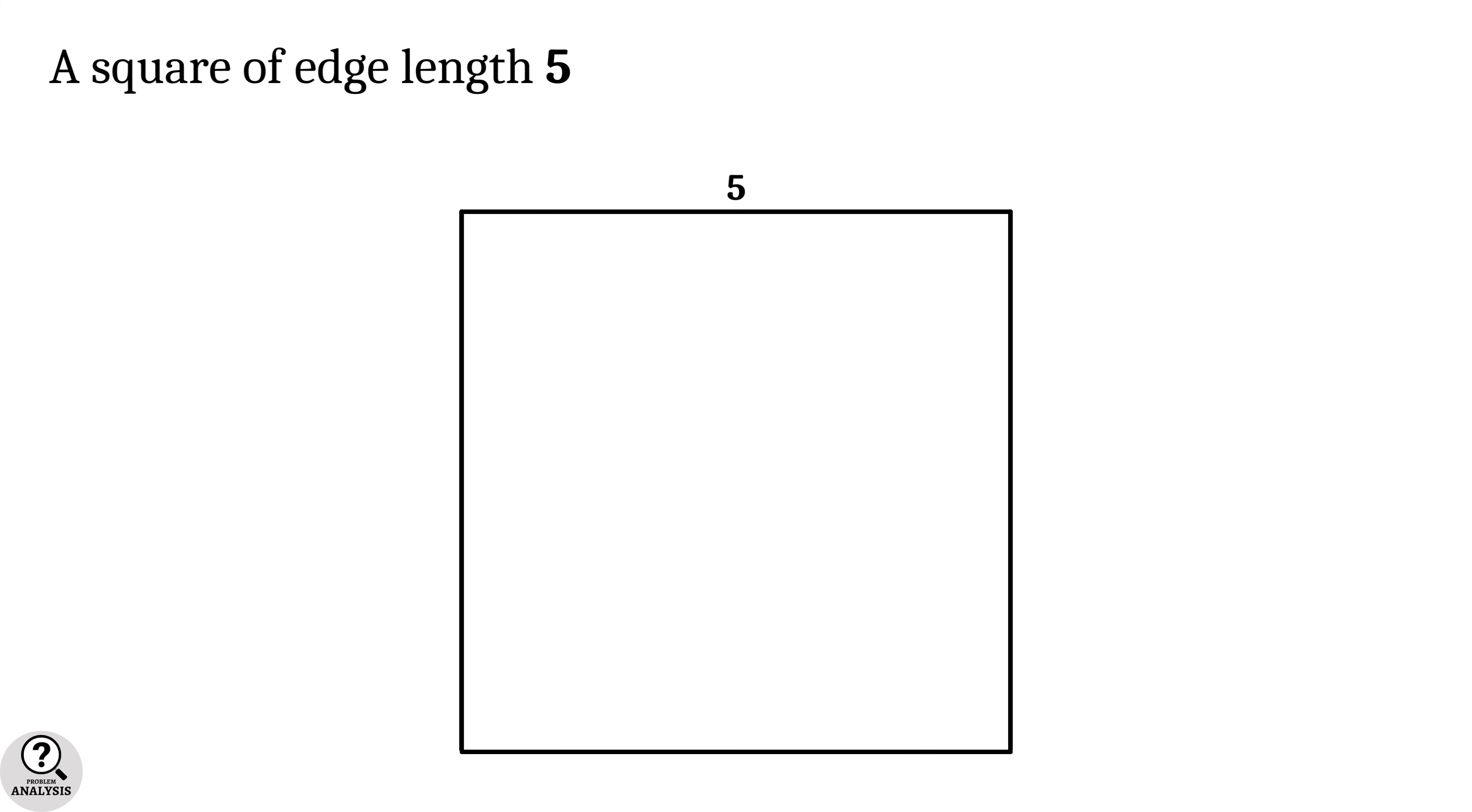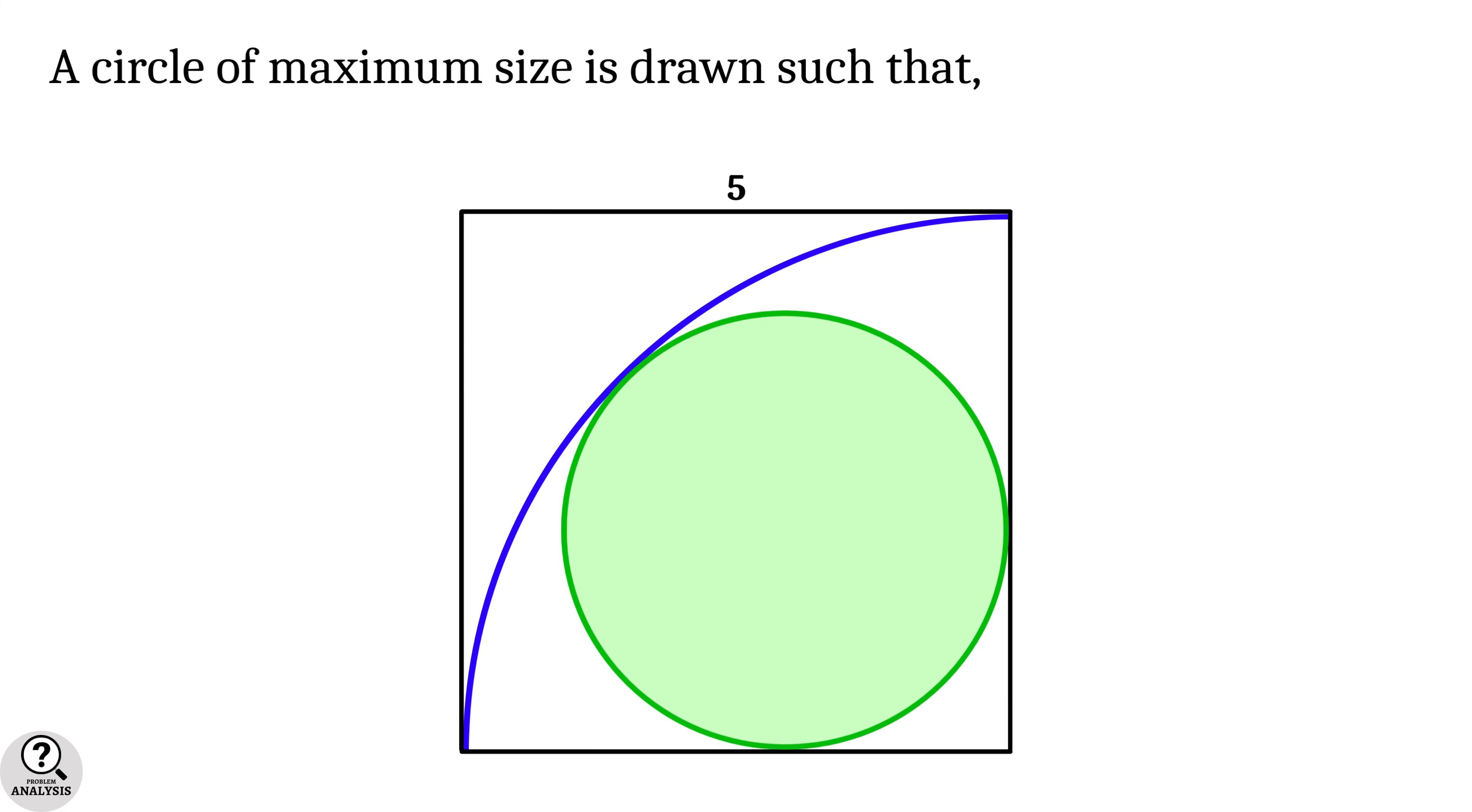A square with edge length 5 units is given. A quarter circle is drawn inside the square which is centered at one corner of it. Now a circle of maximum size is drawn in such a way that it touches the arc and two sides of the square as shown in the diagram. Then my problem is, what is the area of this green colored circle.